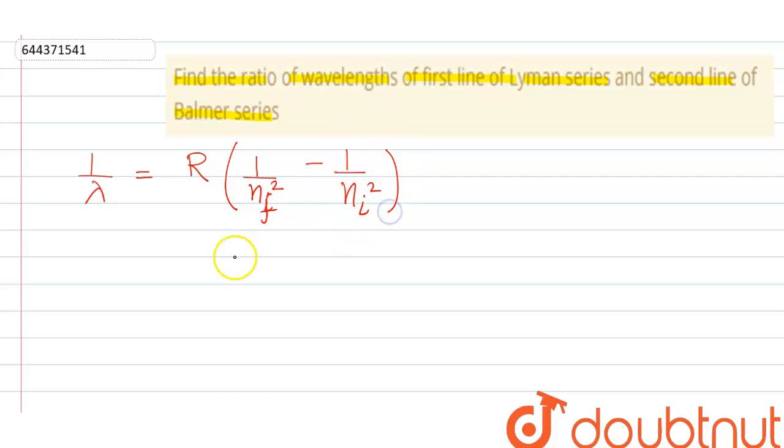Now let us talk about Lyman series and first line of Lyman series. For first line of Lyman series, nf should be 1 and ni should be 2. So that means 1/λ₁ = R(1 - 1/4).